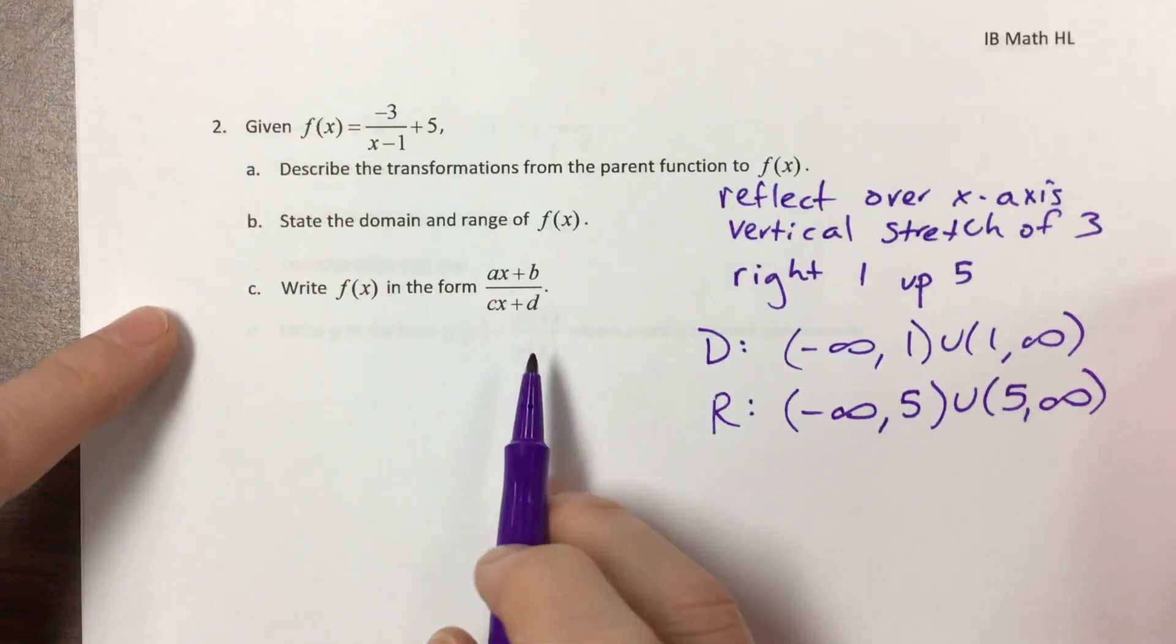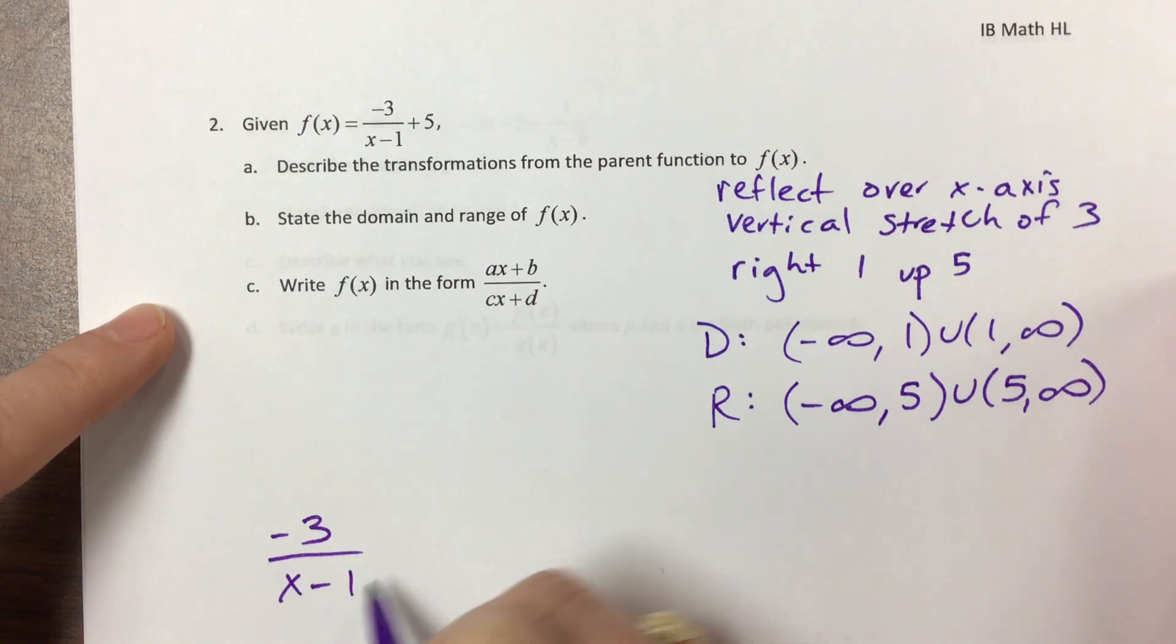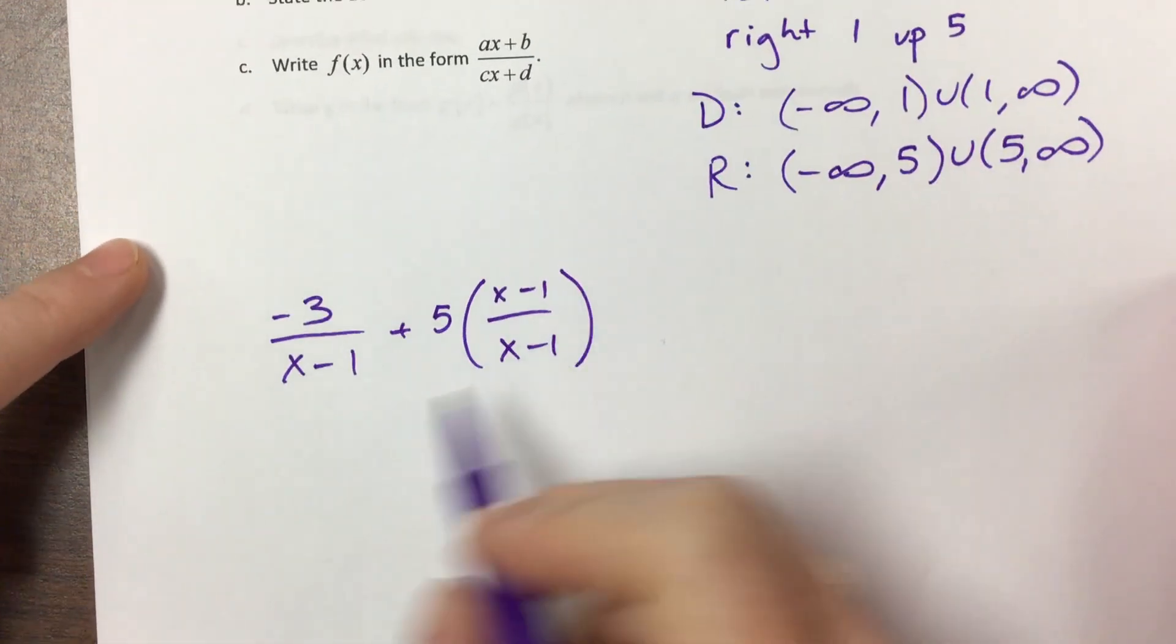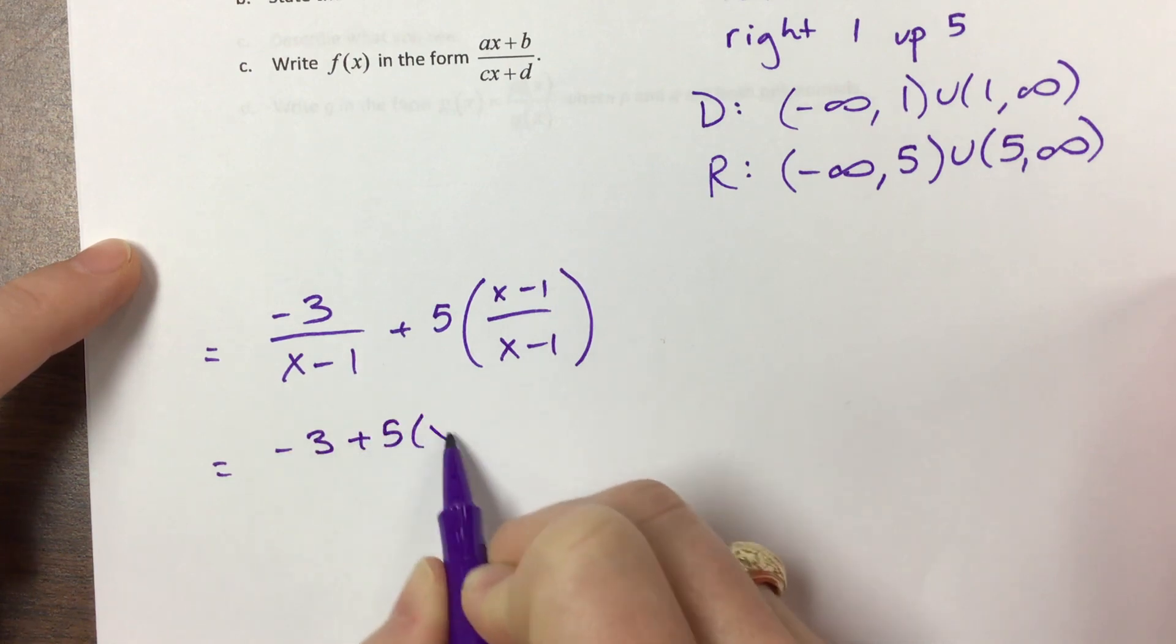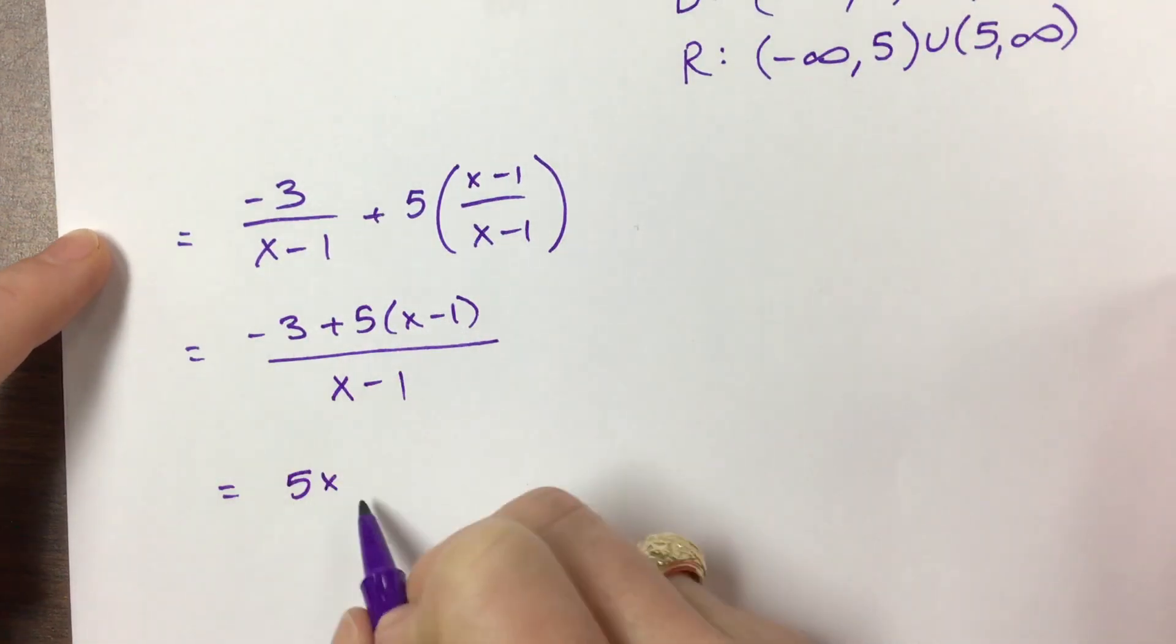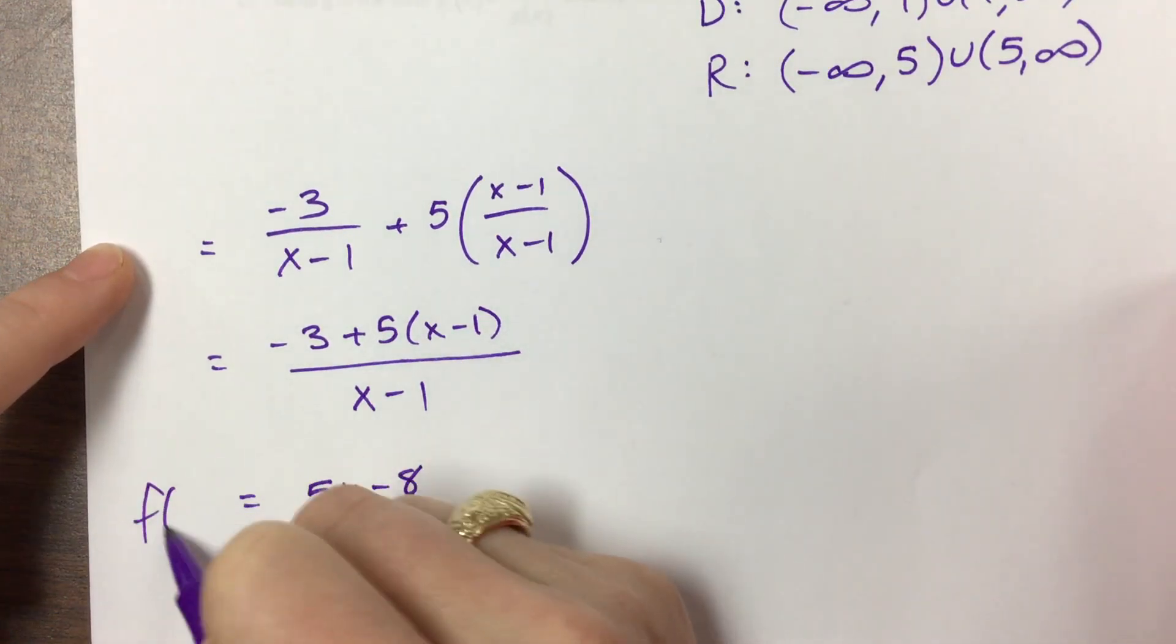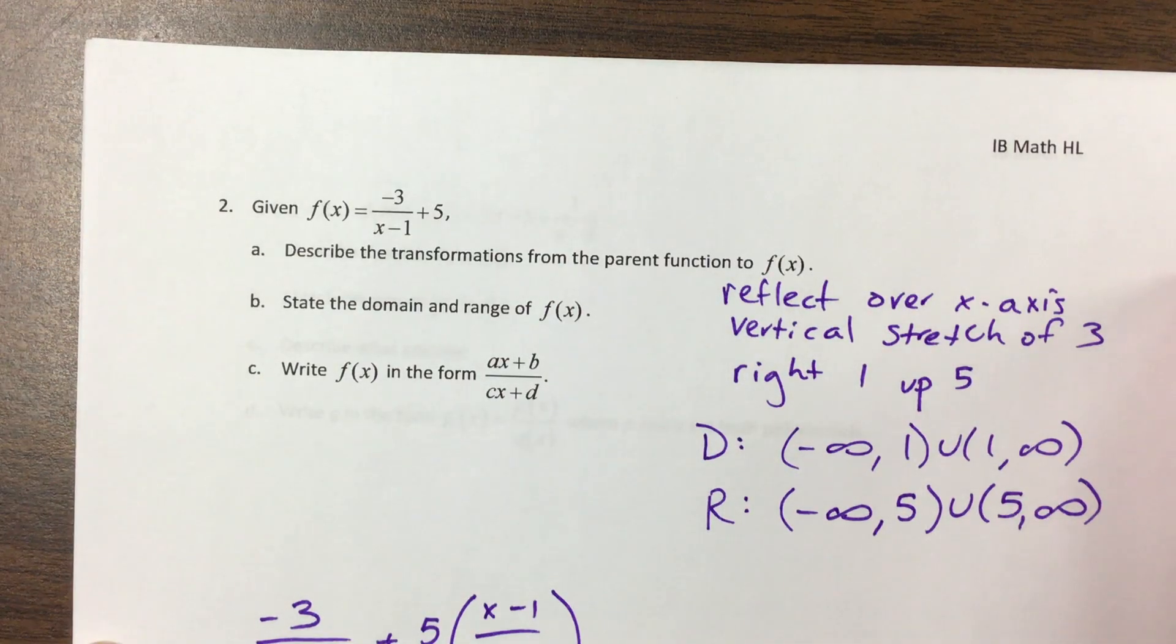Okay, and then they want me to write it in this form. Well, so what I need to do is get a common denominator here. So I have this negative 3 over x minus 1. And I can always multiply by what I like to call a funky form of 1. And this gives me negative 3 plus 5 times x minus 1. Everybody has that denominator of x minus 1. This gives me 5x minus 5 minus 3, so minus 8 over x minus 1. And now that's our f of x that we have written in that form.